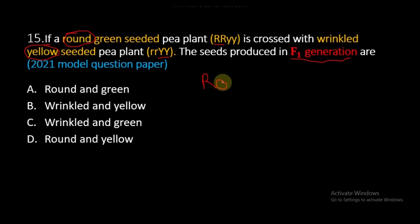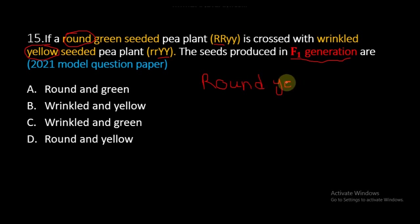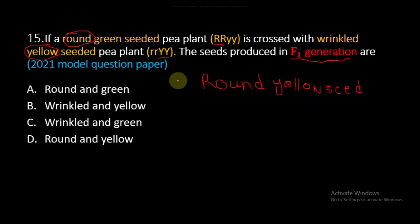In the F1 generation, all the plants will be round and yellow seeded plants. Option D is the correct answer as it is round and yellow, so option D is the right answer.